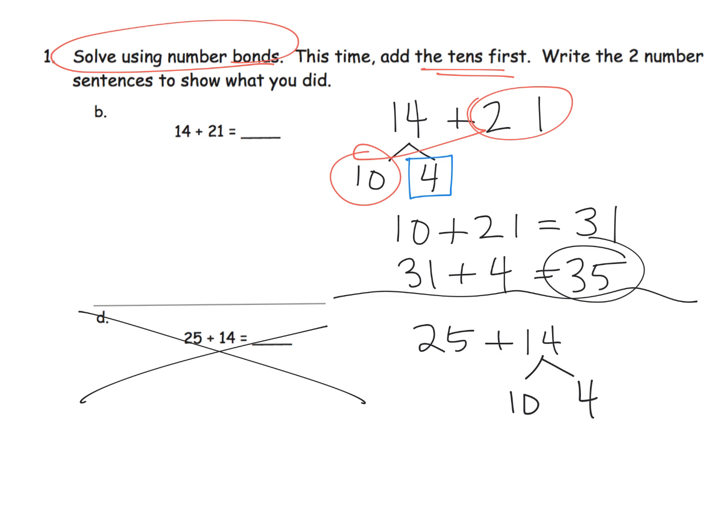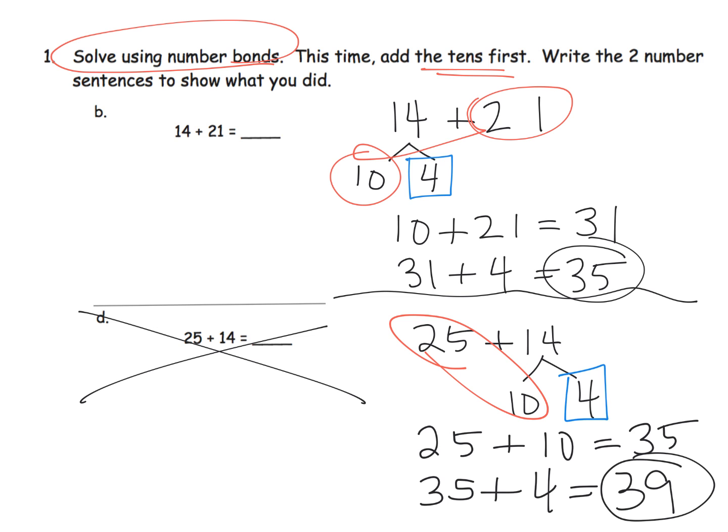But the idea is we want to make sure in this lesson we're always decomposing the number in the teens. And because we want to add the tens first, in this case I'm going to add 25 and 10. And so 25 plus 10 gives me 35. And then we're going to take that 35 and we're going to add in the number that we have left over, which is that 4. So we're going to do 35 plus 4, and that gives us 39. And that is the final answer. So to recap this page, we're decomposing, and then adding the tens.